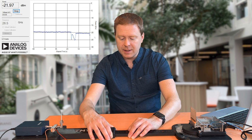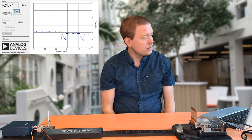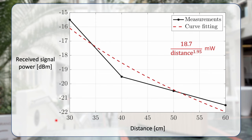When we continue, we increase the propagation distance to 60 centimeters — twice the initial distance. The received signal power has reduced by another roughly 1 dB to minus 21.5 dBm. This graph shows the four measurements at 30, 40, 50, and 60 centimeters, with the received signal power on the vertical axis. Straight lines are drawn between the four measurement points, and we can see that as distance increases, the received signal power decreases as expected.